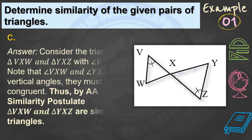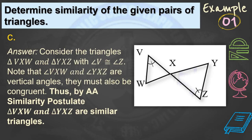For the third example, consider triangles VXW and YXZ. Angle V is congruent to angle Z based on the given figure. Note that angles VXW and YXZ are vertical angles, and vertical angles are congruent. Thus by AA similarity postulate, triangle VXW and triangle YXZ are similar triangles.